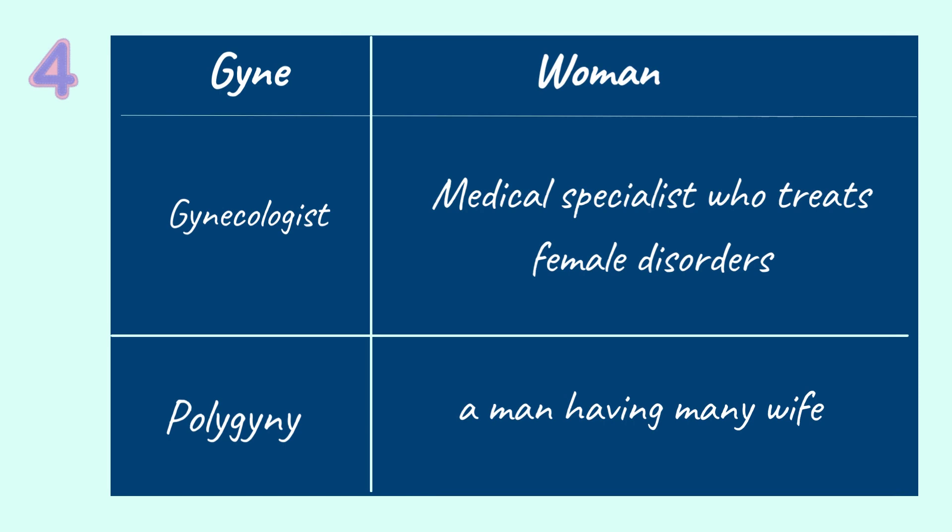The fourth root word is Gyne, meaning woman. There are 2 words related to Gyne: Gynecologist — a doctor specializing in female health; and Polygyny — a man having more than one wife. I hope you are clear on the root word Gyne and the related words gynecologist and polygyny.